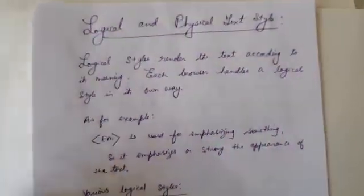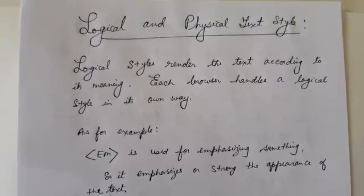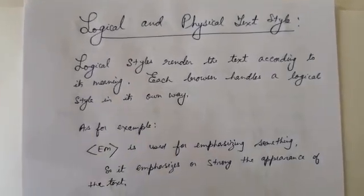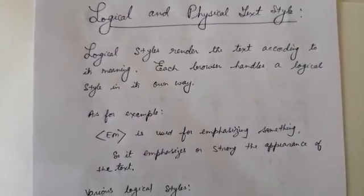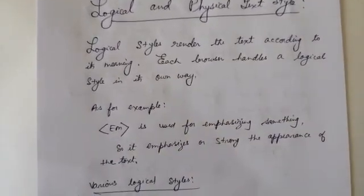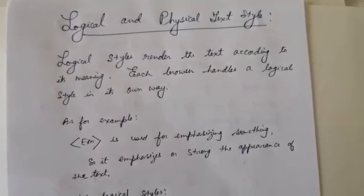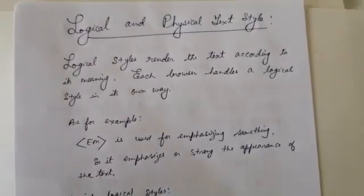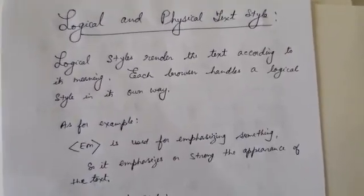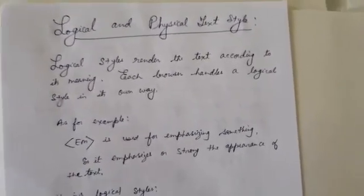Logical and physical text styles — there are tags through which we can change the appearance of the text. Logical and physical text styles are actually tags divided into two categories.